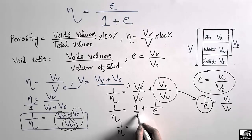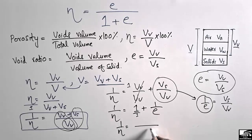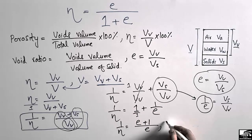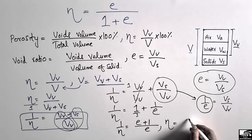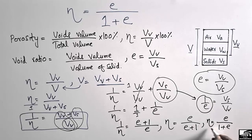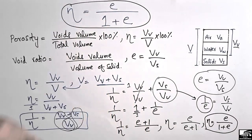Taking the LCM, 1 over n equals e plus 1 divided by e, which is the reciprocal form of the porosity relation. Taking the reciprocal once more, n equals e divided by e plus 1, or n equals e divided by 1 plus e. This is the proven relation between porosity and void ratio.